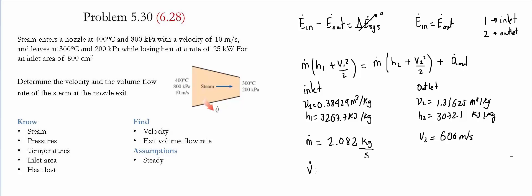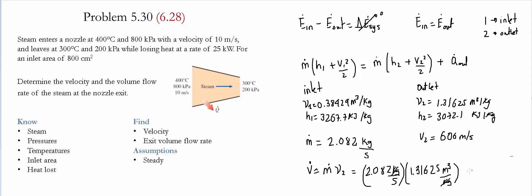Now we need to find the volume flow rate. The volume flow rate is simply the mass flow rate multiplied by the specific volume at the exit. The mass flow rate is 2.082 kg/s and the specific volume at exit is 1.31623 m³/kg. The units cancel to give a volume flow rate of 2.74 m³/s.